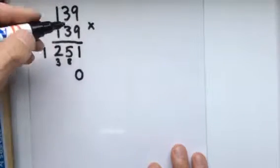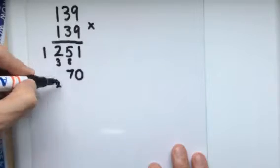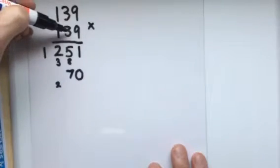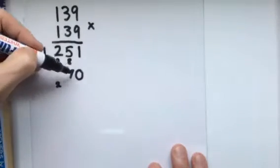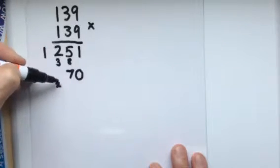So, 3 times 9 is 27. I'm going to put the 7 in and carry the 2. Now, just to clarify that, that's 30 times 9 is 270. I've written the 270 in a way that allows me to carry this 2.